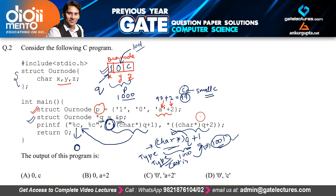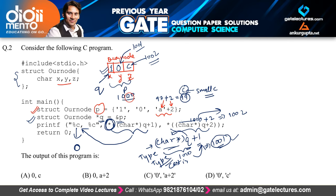For the next value, (char*)Q + 2 gives address 1002. At location 1002 we have the character 'c'. So 'c' will be printed — it is a small c. This is easy to calculate for free marks in the examination. The output of the program will be character '0' as well as character 'c', so these two characters are printed.